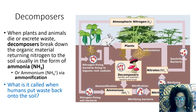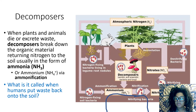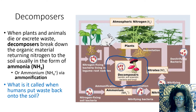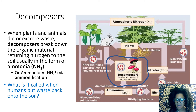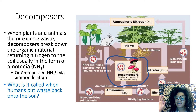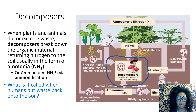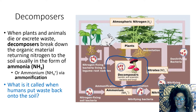Just like in the carbon cycle, decomposers return nitrogen to the soil and are very important. All decomposers break down the nitrogen in bodies and return it to the soil — not as just nitrogen, but as ammonia or ammonium. This process is called ammonification. Ammonification is when the nitrogen in the bodies of dead organisms is decomposed and transformed into ammonia and ammonium. When humans put waste back onto the soil, we call that fertilizing.